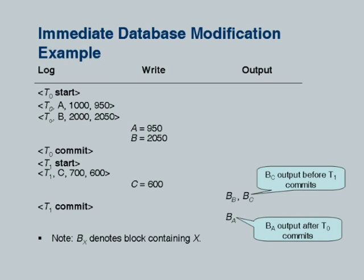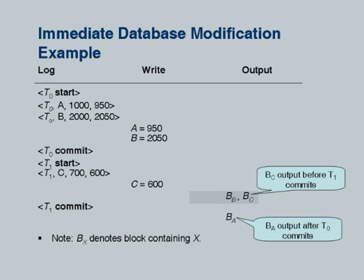Consider an example: T0 starts, updates A from 1000 to 950 and B from 2000 to 2050, writes those before committing. The writes are done before the commit but are still in the buffer, not yet on disk. Output may happen later — buffer blocks BB and BC can be output to disk after the transaction commits. Conversely, BC can be output even before T1 commits. Both of these can happen and the recovery mechanism has to deal with it.